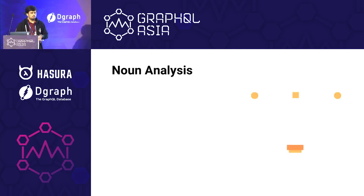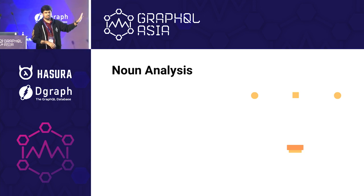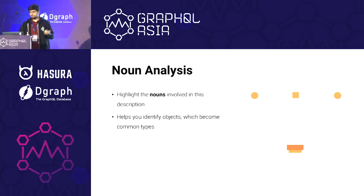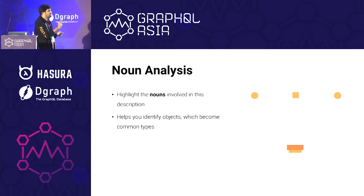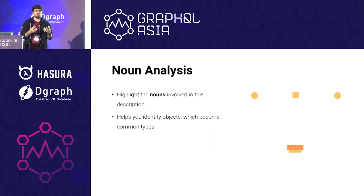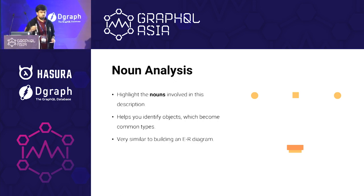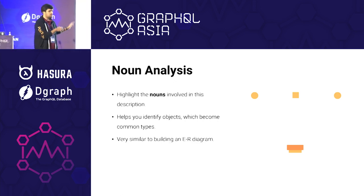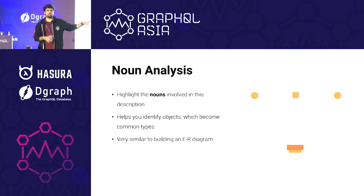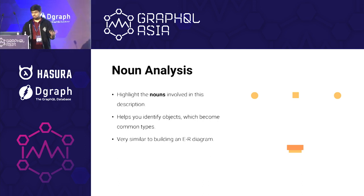Once you have done that, we do noun analysis. I did this in my database management class in undergrad and thought I'd never use it again — but here I am. It simply means you highlight the nouns in your description. This helps you identify objects — name, place, animal, thing — which become your common types. They help you identify relationships between various things. If you come from the world of databases, it's very similar to building an ER diagram — you are essentially finding entities in your product flows.